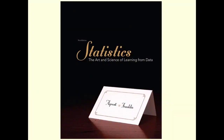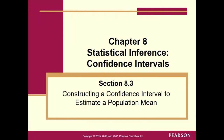Good day, stats students. Today we're going to go over 8.3. We're going to create a confidence interval to estimate a population mean. We've got to figure out why we're changing over to means versus proportions — what changed from 8.2, whether the data changed, whether the formulas are going to change.